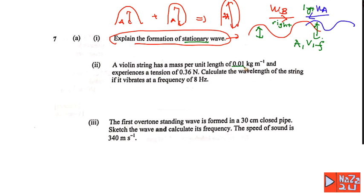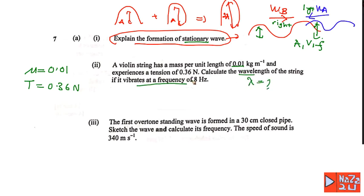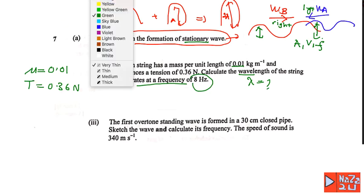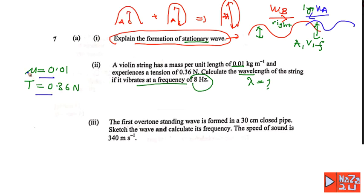Number seven: a violin string has mass per unit length μ = 0.01 and tension T = 0.36 Newton. Calculate the wavelength of the string when it vibrates at a given frequency. We can use the tension and μ (mass per unit length) with the equation: speed v = √(T/μ).